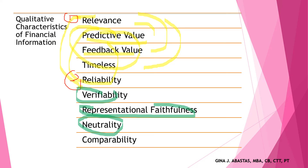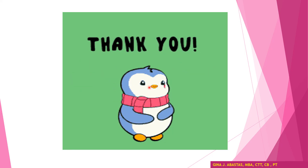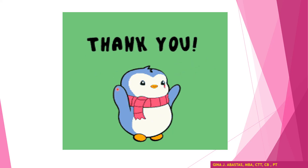The third qualitative characteristic is comparability. Comparability is a quality of accounting information that addresses the usability of financial information. Information prepared using the same measurement techniques and reported in a similar format can be judged side by side with other similar financial information. This is extremely important to the end users of financial statements. That concludes this video discussion for Module 2 or Week 2 of your Fab M1 subject. Thank you.